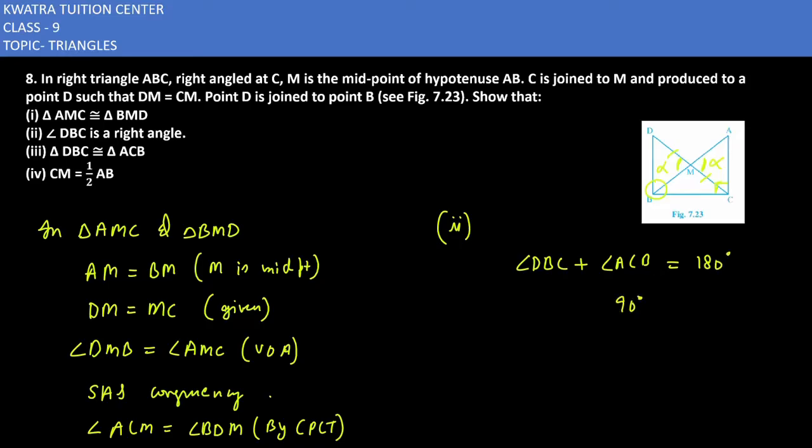If angle ACB is 90 degrees, then angle DBC value is also 90 degrees. So it would be 90 degrees. Now the second part is proved. Now the third part.